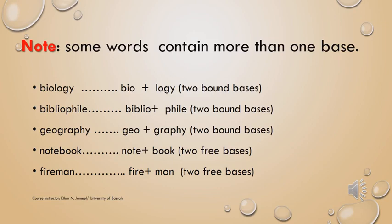The final example is 'fireman.' Fireman consists of two morphemes: fire and man. Each one is a free morpheme in English — fire is a free morpheme and man is a free morpheme. We are not talking about a man only, or fire only — we are talking about a fireman. So both of them carry the principal meaning of the word fireman, which makes them the bases of the word fireman. And because both of them are free morphemes, these two bases are free bases.